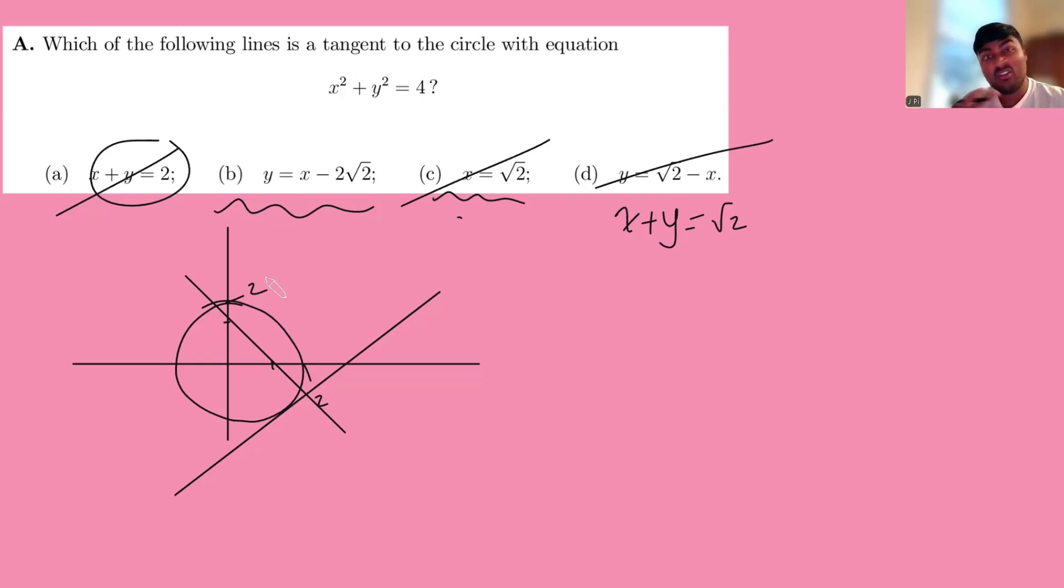If you didn't do this, and what unknowingly A-level teaches you to do is just plug in each of these four options. So what maybe you might be tempted to do is take, let's say, this first example, x plus y equals 2, and substitute it into here.